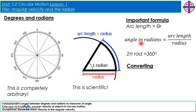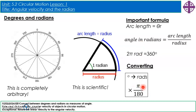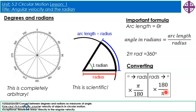To convert between degrees and radians: to go from degrees to radians, multiply by π over 180. To go from radians to degrees, multiply by 180 over π.